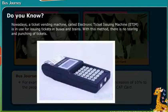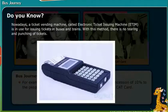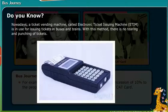Nowadays, a ticket vending machine called the Electronic Ticket Issuing Machine is in use for issuing tickets in buses and trains. With this method, there is no tearing and punching of tickets.